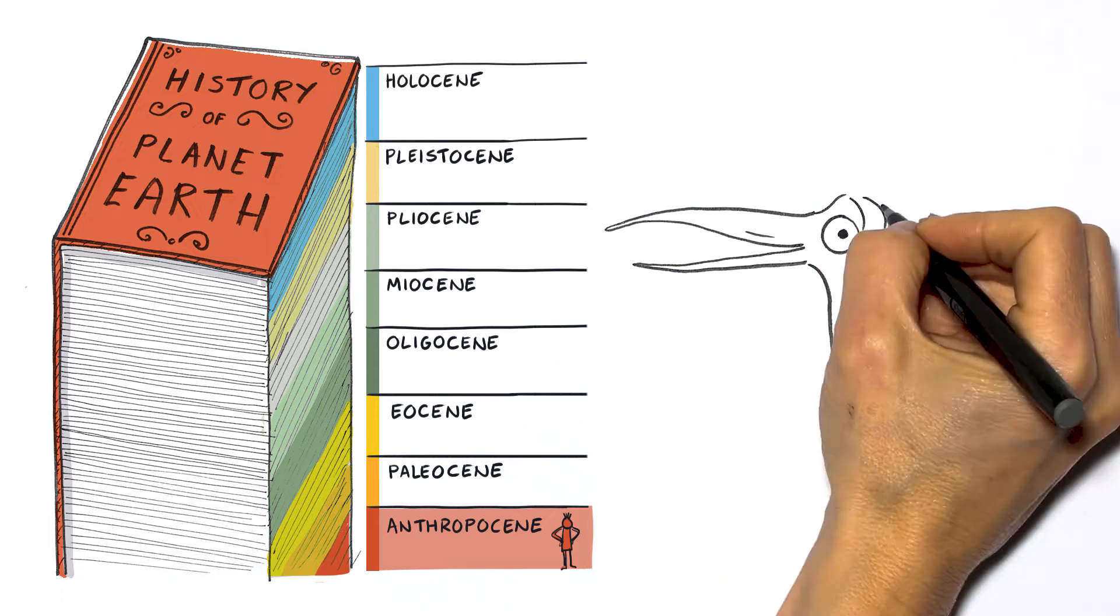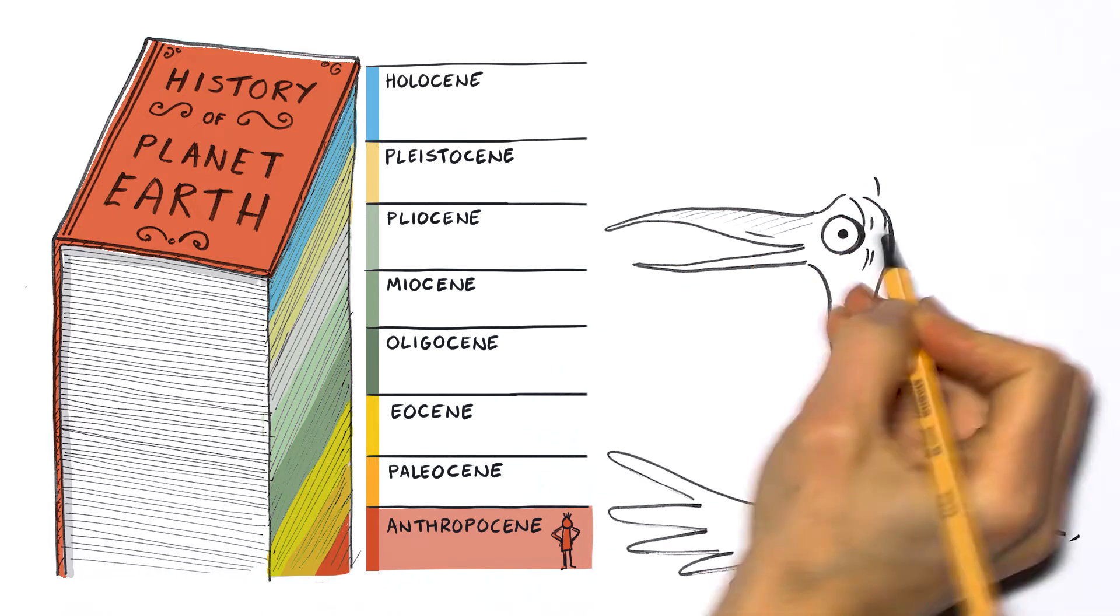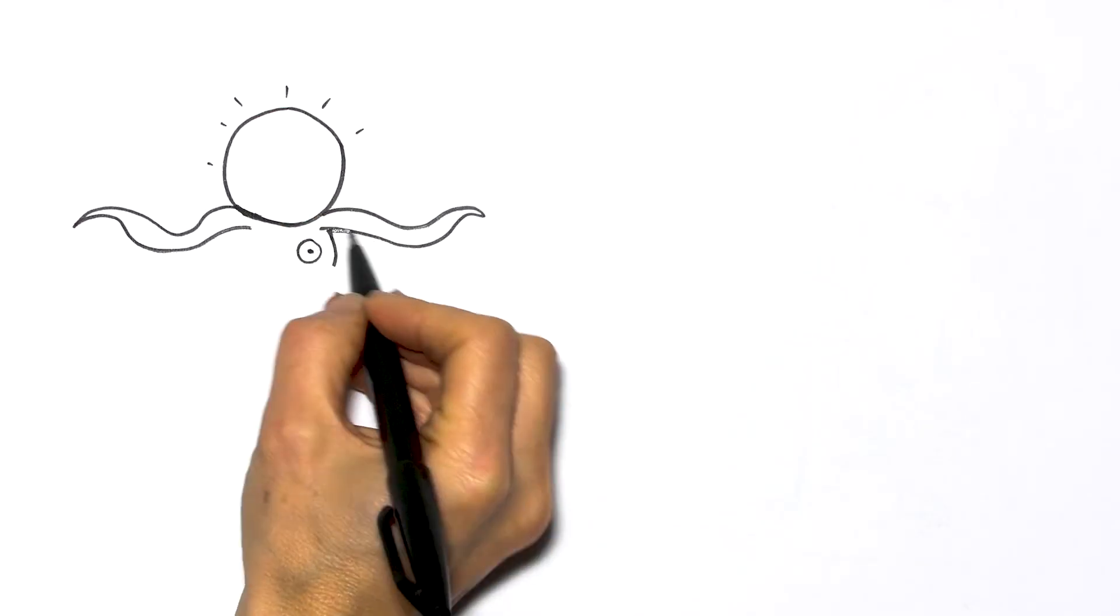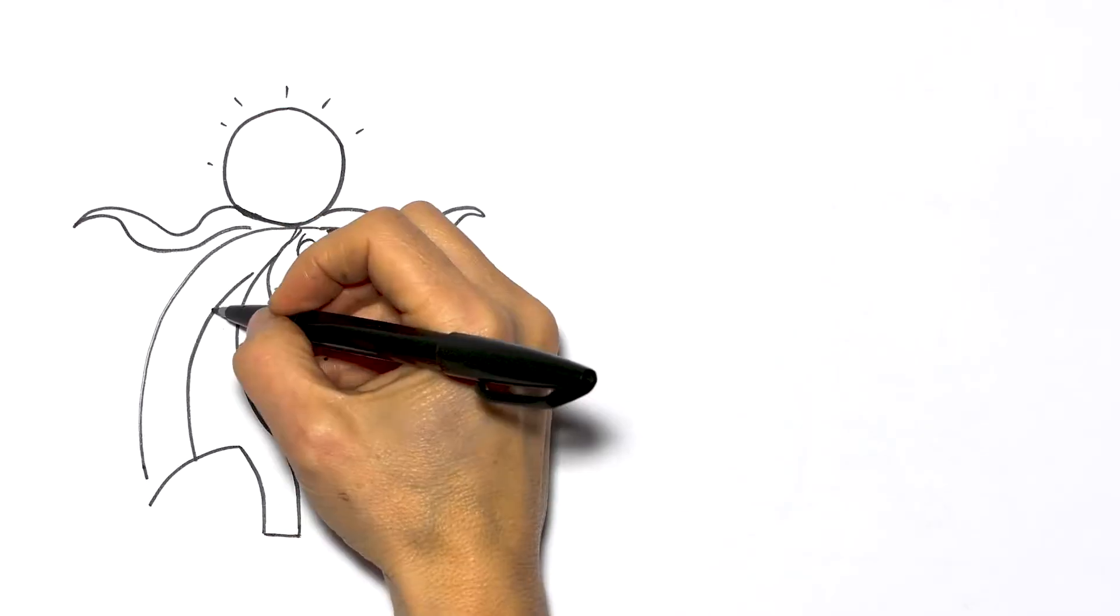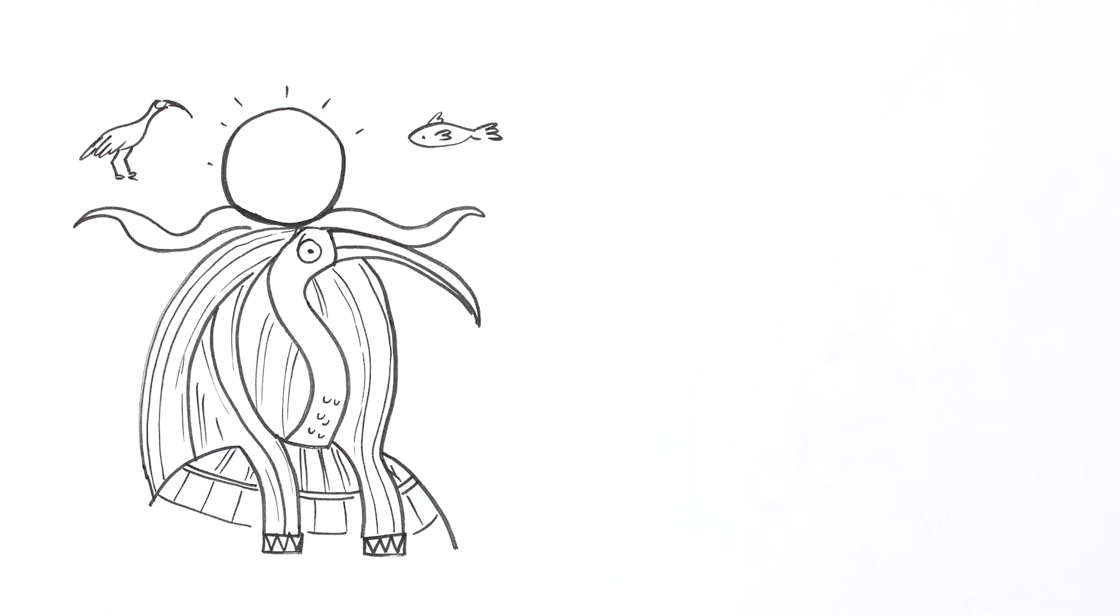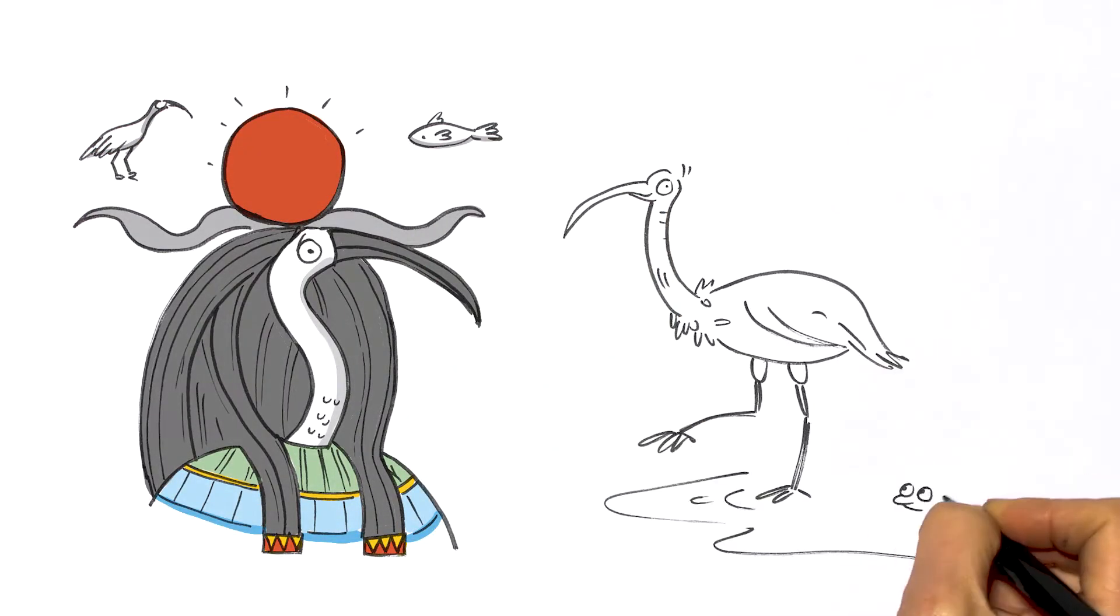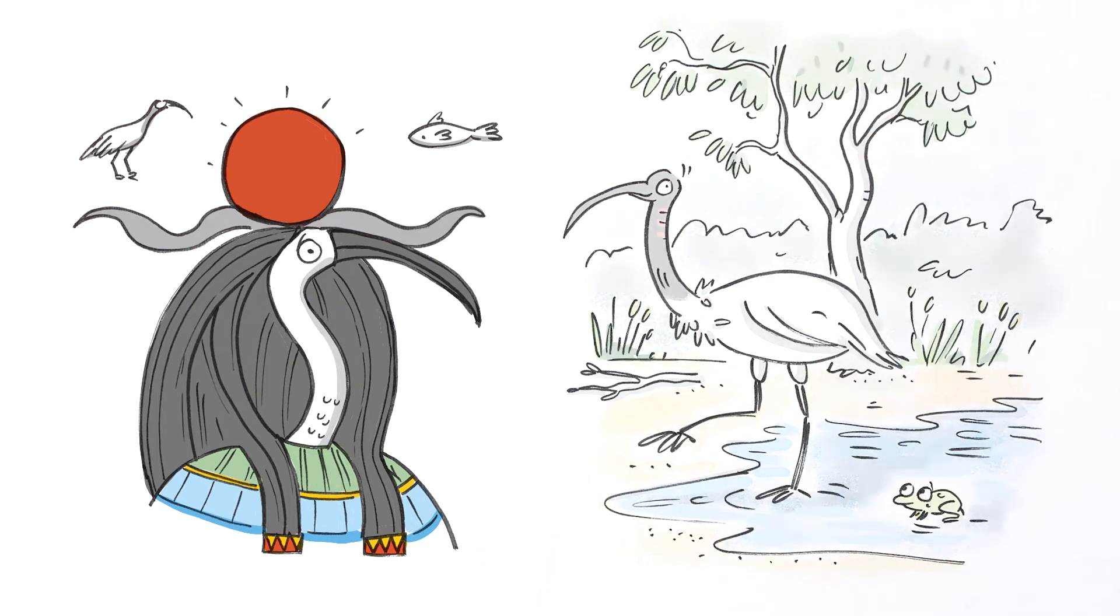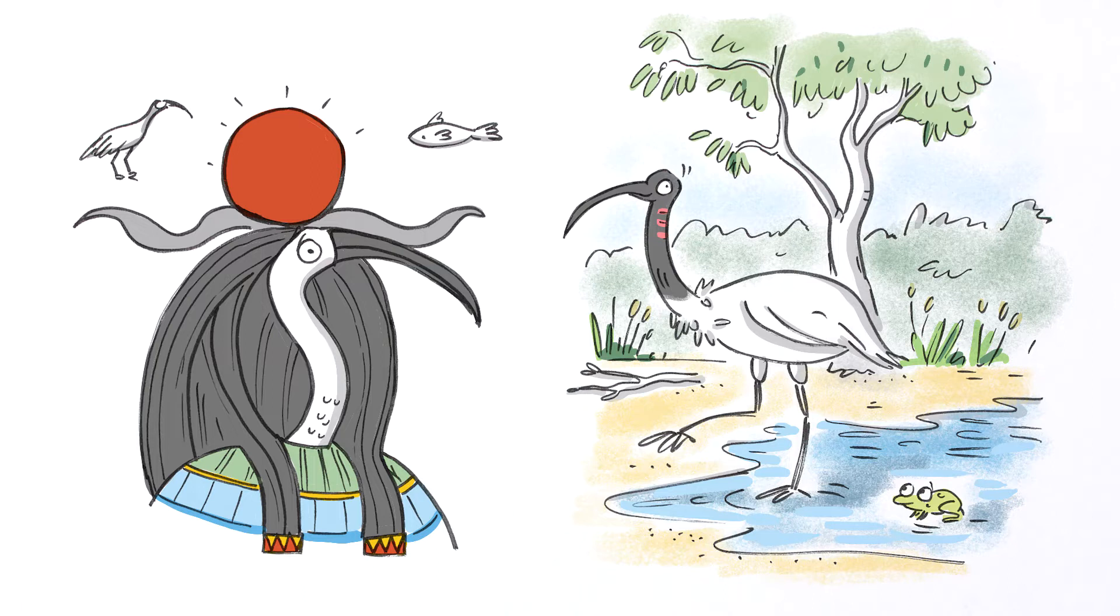So, what makes humans so special that you'd even get this chapter named after you? Believe it or not, humans once worshipped us, the humble bin chickens. Our cousins in Egypt were seen as sacred. And here, in what we now call Australia, we've been respected by human cultures for thousands of years too.